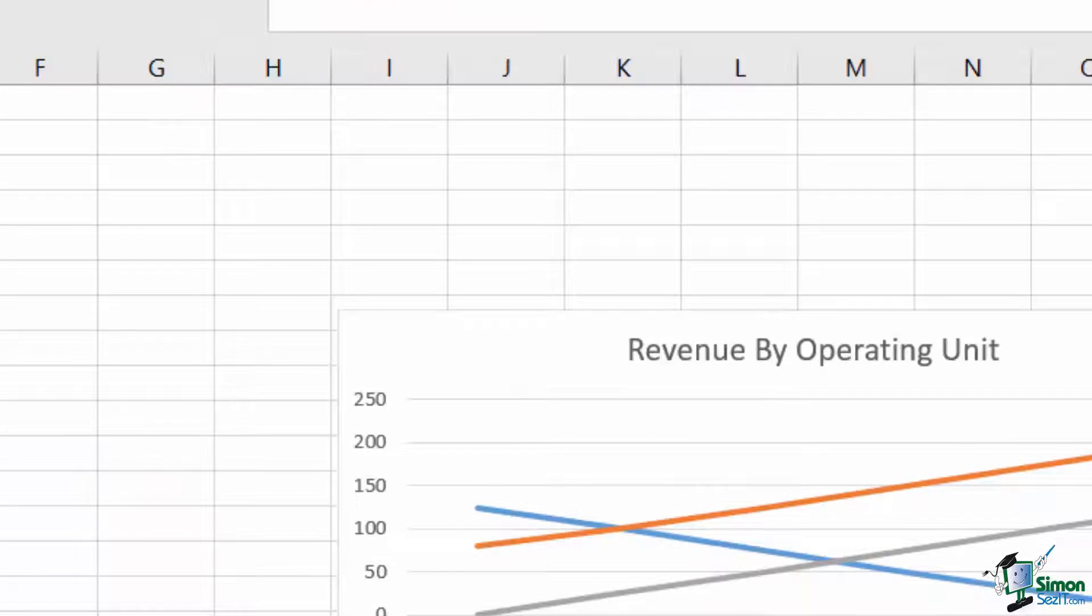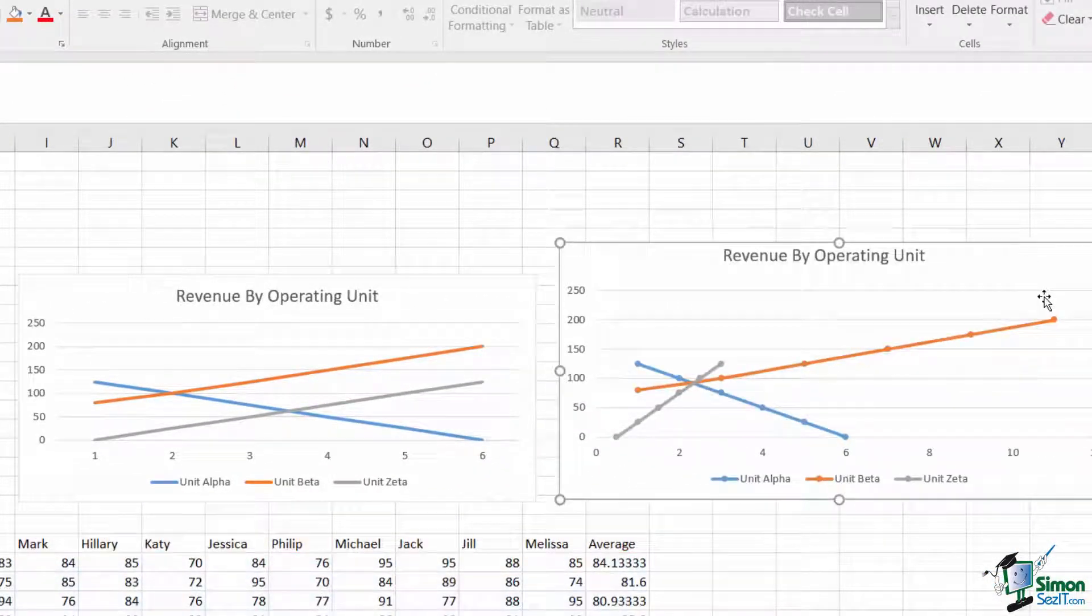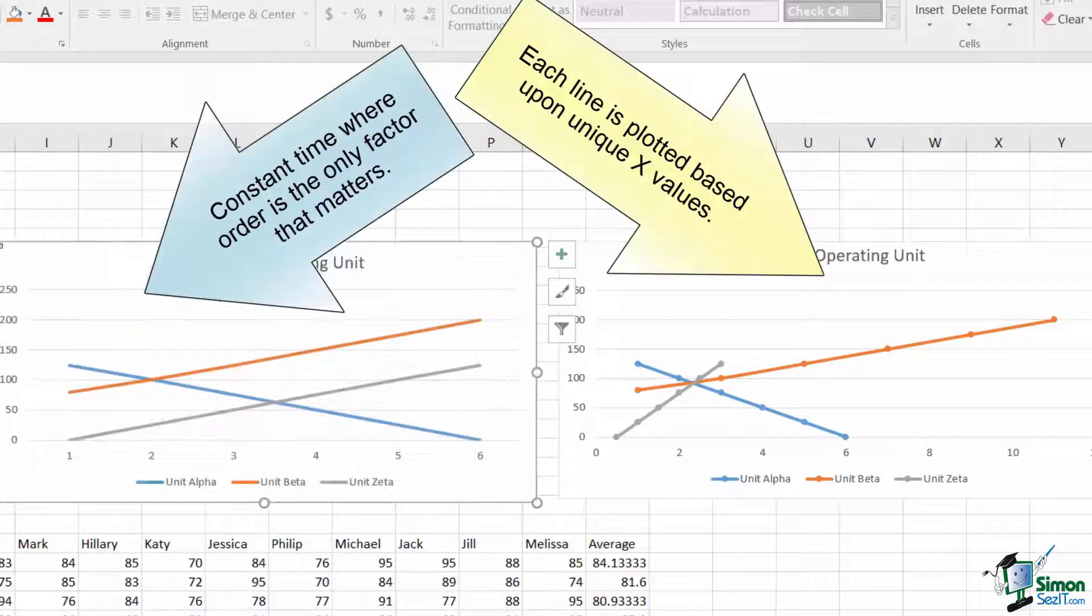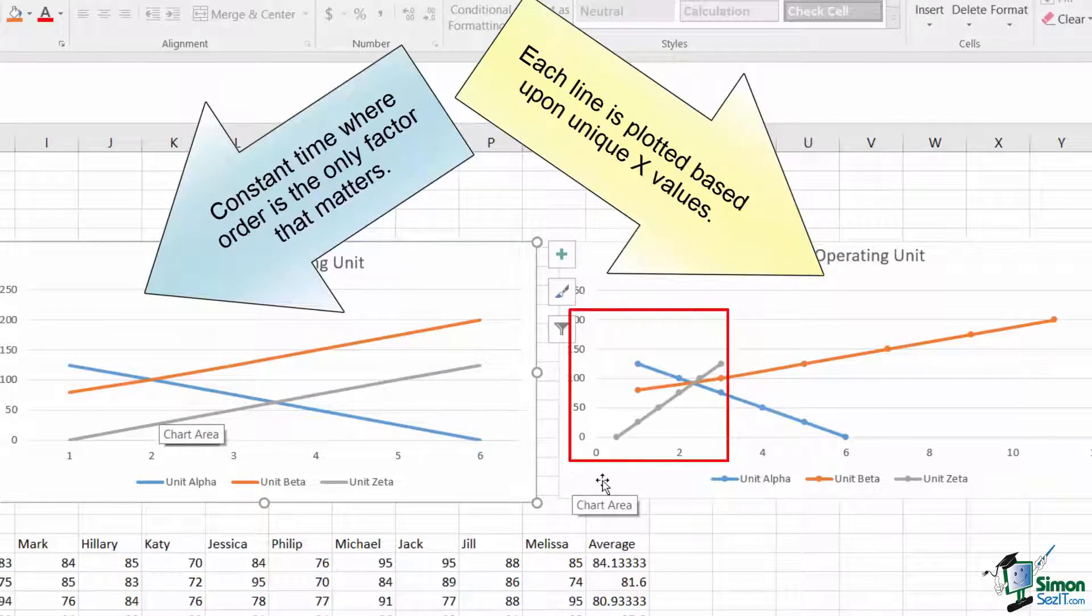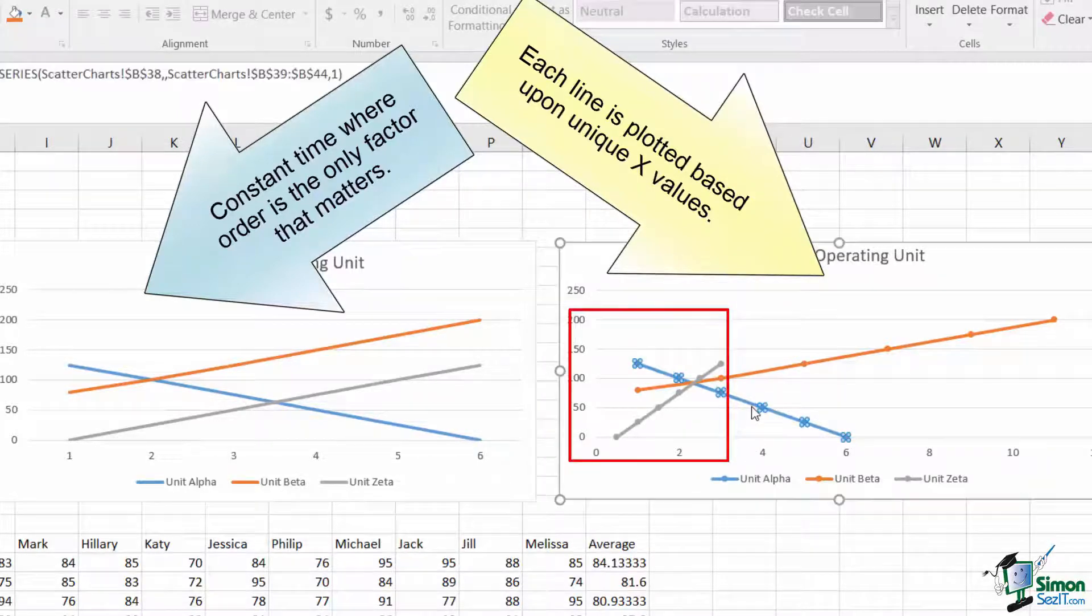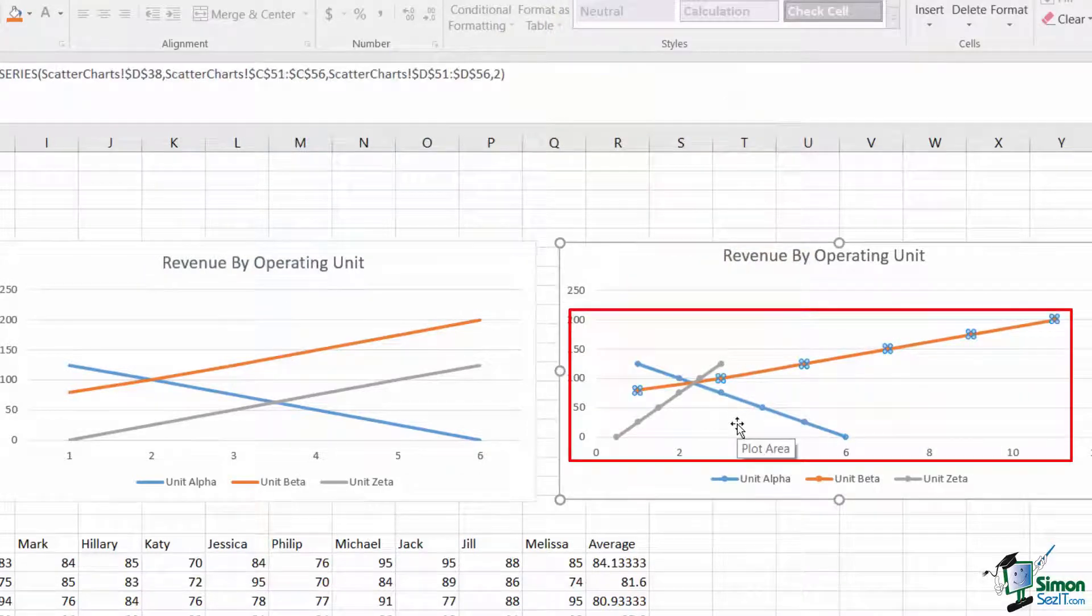Suppose, for example, that the revenue information that we had for our three operating units was spread across different points in time. Here's our standard line chart, where the line chart implicitly assumes that each one occurs at the same point in time. On the right, I've used a scatter plot with smooth lines, where the zeta data was reported over a timeframe of every six months for three years, the alpha was reported every year over six years, and the beta data was reported every two years over 12 years.